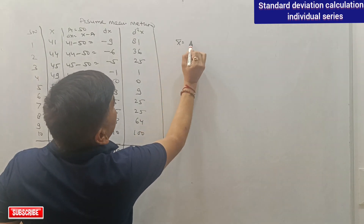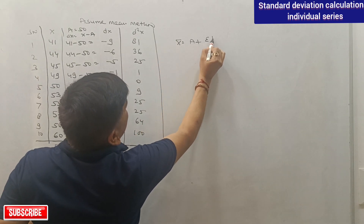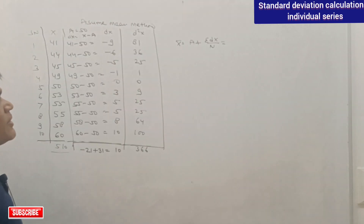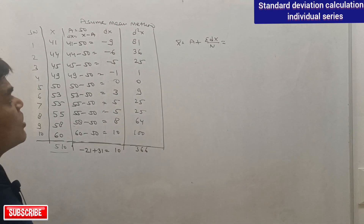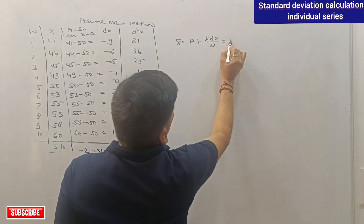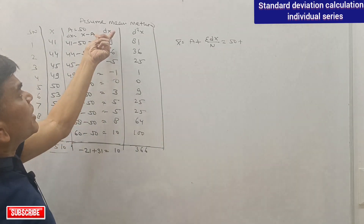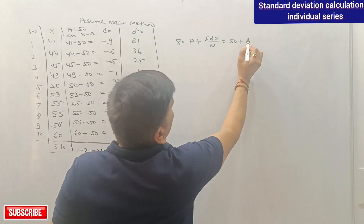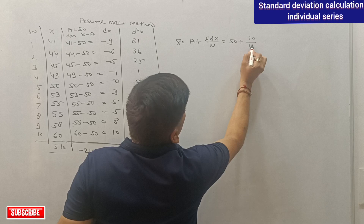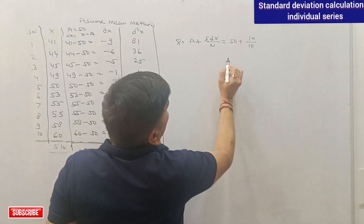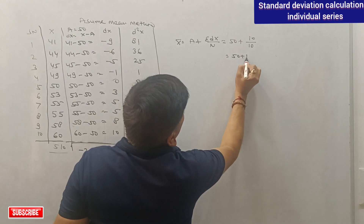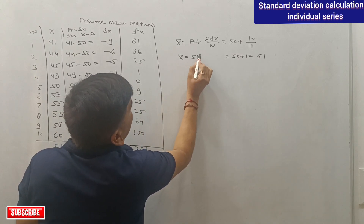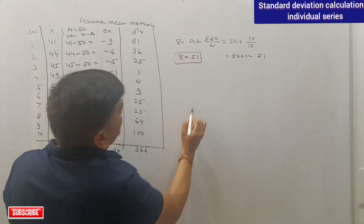The arithmetic mean is: X-bar = assumed mean + (sigma dx / N) = 50 + (10 / 10) = 50 + 1 = 51. So the value of X-bar is 51, the same as we calculated in the direct method.